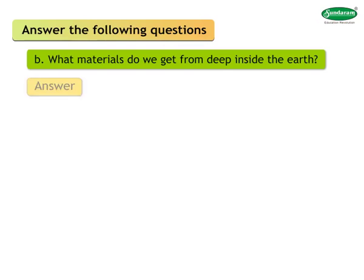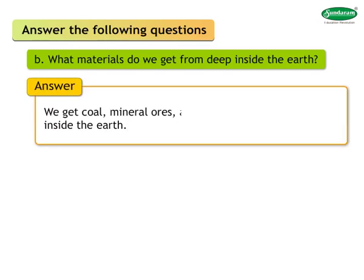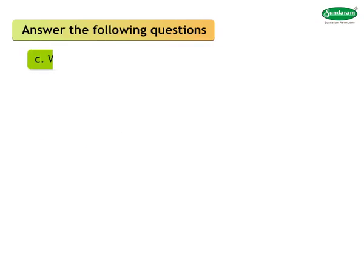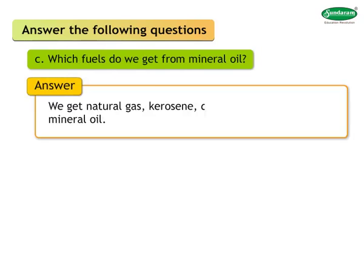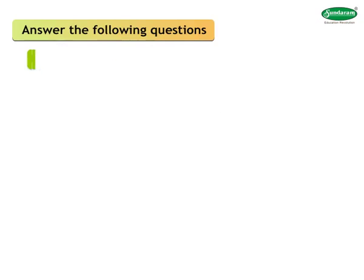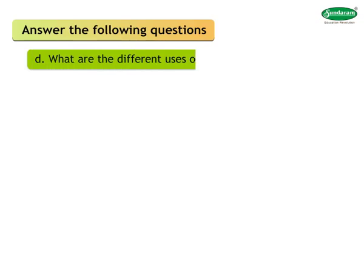Answer: We get coal, mineral ores, and mineral oil from deep inside the earth. C: Which fuels do we get from mineral oil? Answer: We get natural gas, kerosene, diesel, and petrol from mineral oil. D: What are the different uses of plants?